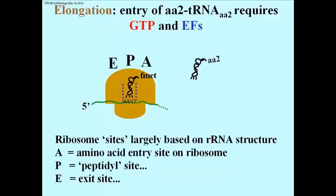On the ribosome that is about to begin elongation, we recognize three sites. We have the A site, which you see on the right — the amino acid entry site. As you might guess, amino acid 2 with its tRNA is going to enter at that site. The P site stands for peptidyl site, and you will see why it's called the peptidyl site in just a moment. And the E site is the exit site — you will see why it would be called the exit site as we follow what happens.